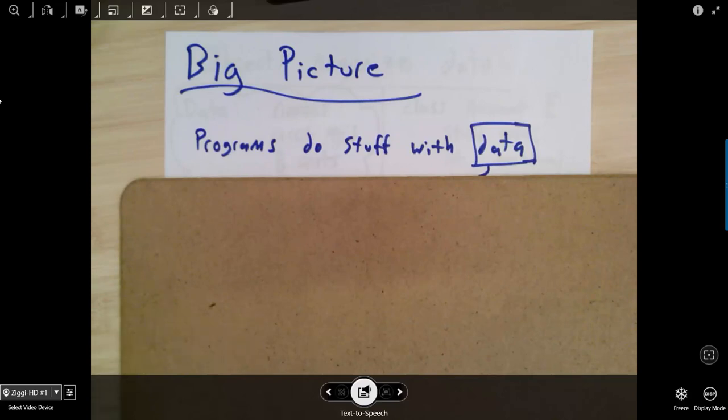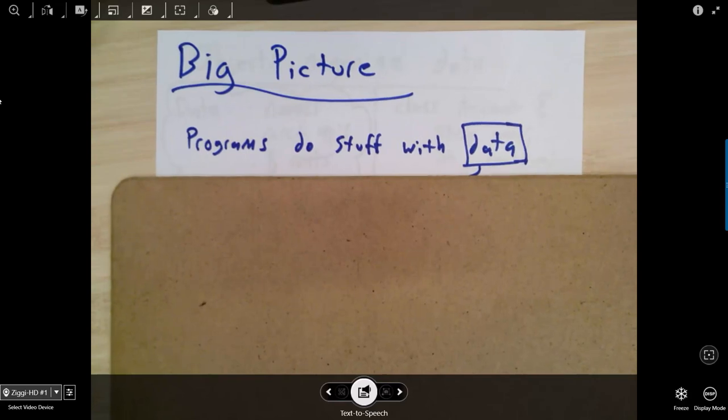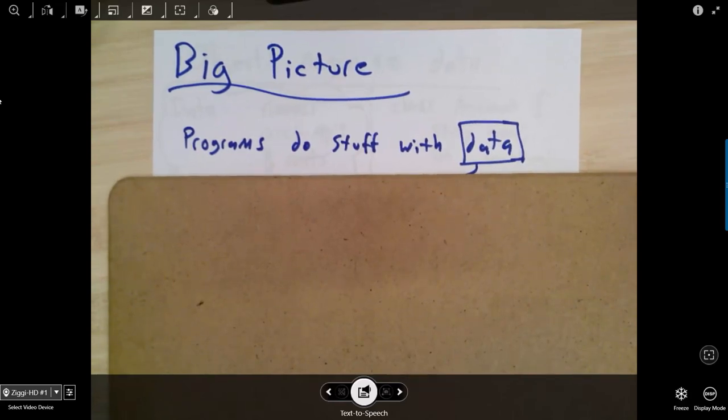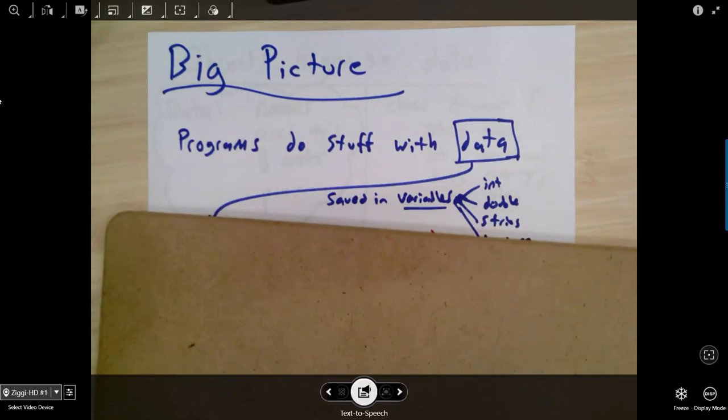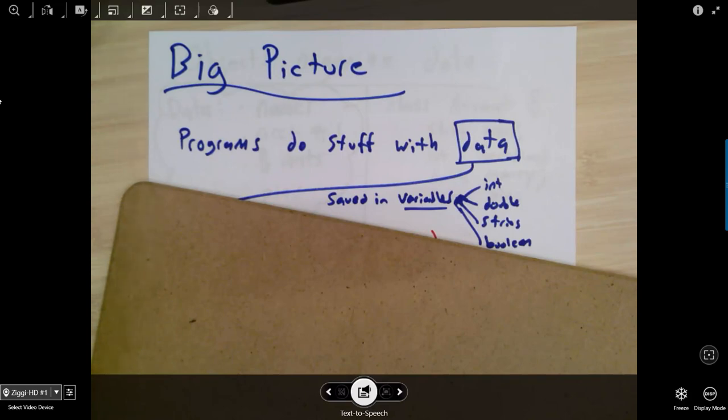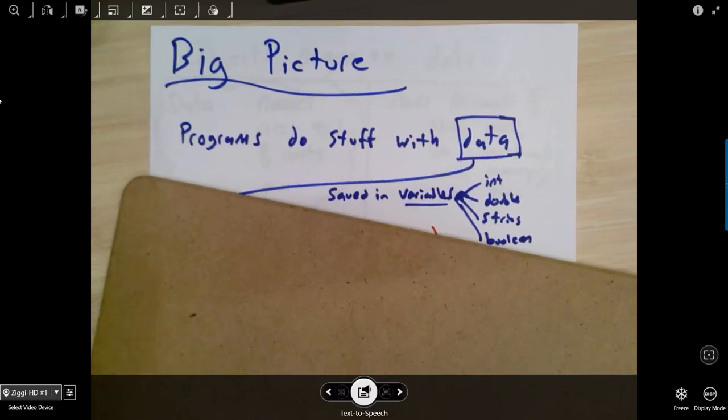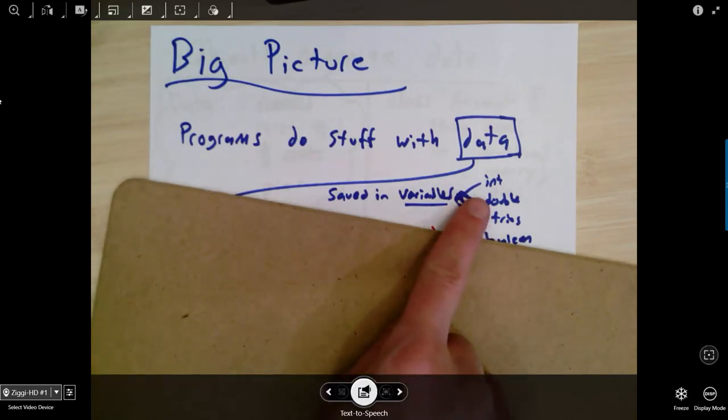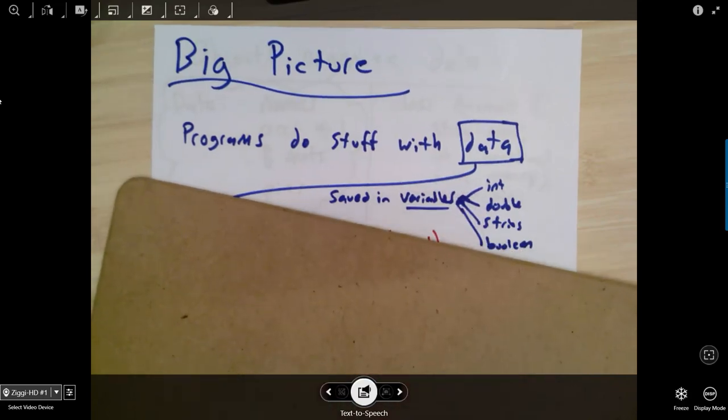The big picture of all software is programs really at a fundamental level just do stuff with data. It's all about numbers inside variables. So the types of data that we have to work with are anything that's inside our variables - so ints, doubles, strings, booleans. And you might be thinking something like Instagram has pictures, but really at the base a picture is just a grid of int values. Every single pixel is a color and that color is represented by an integer. So no matter what type of data you have - images, audio, video - at the end of the day it's all just these basic kinds of data inside variables.